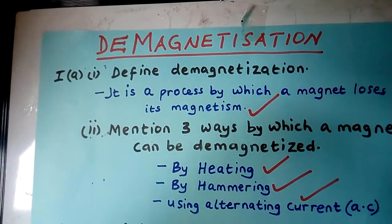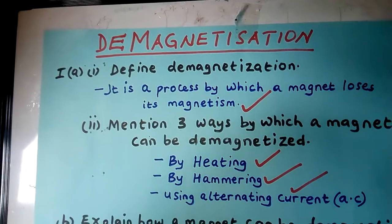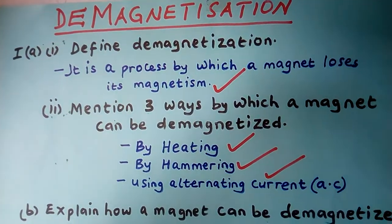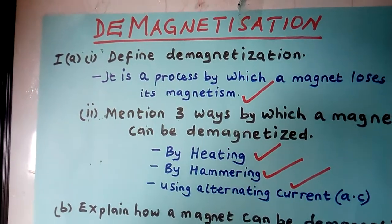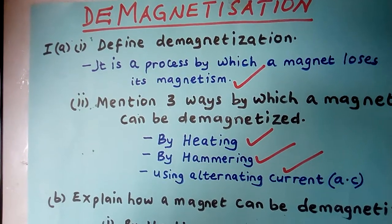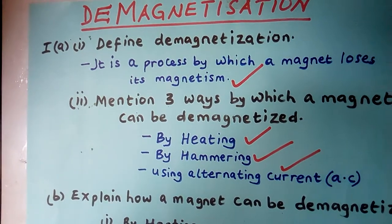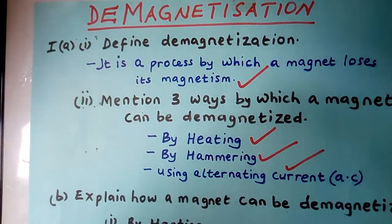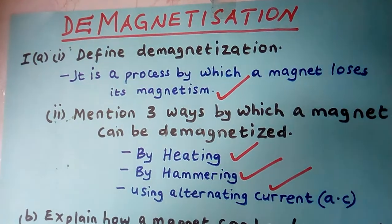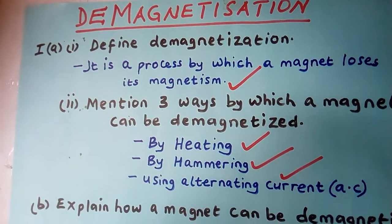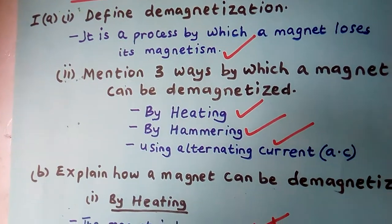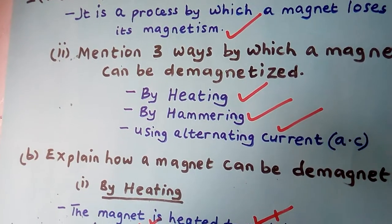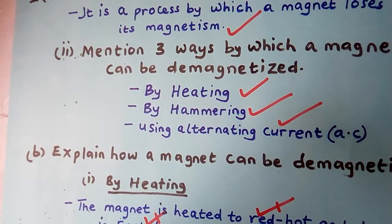Let us look at the term demagnetization. Demagnetization simply means a process by which a magnet loses its magnetism. So if you have a magnet and you ensure that it loses its magnetism, the process of doing that is what we call demagnetization. There are three ways of doing that. When somebody says mention three ways by which a magnet can be demagnetized, they are asking you to tell us three ways in which a magnet can lose its magnetism.